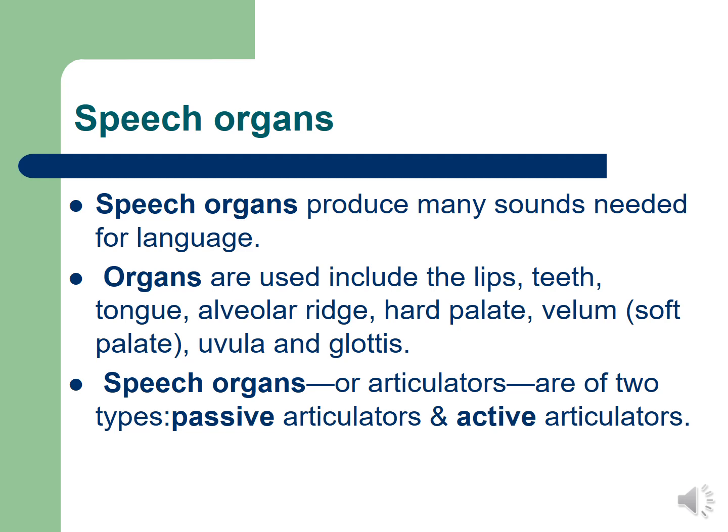The speech organs are the organs that are used to produce speech sounds in a language. The organs used in the production of sounds are: the lips, teeth, tongue, alveolar ridge, hard palate, velum — also called the soft palate — uvula, and glottis. These are the organs we're going to talk about, because they are used in the production of sounds.